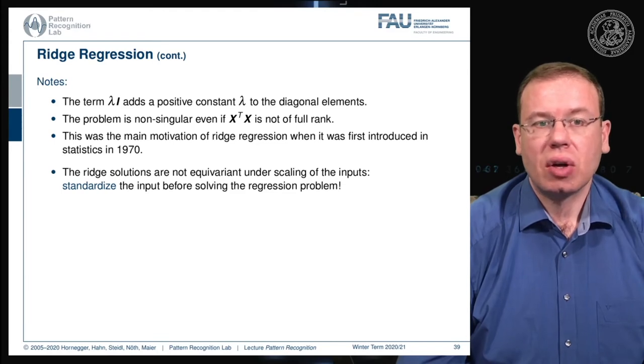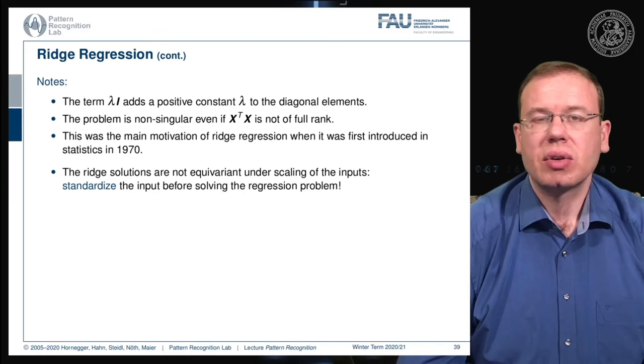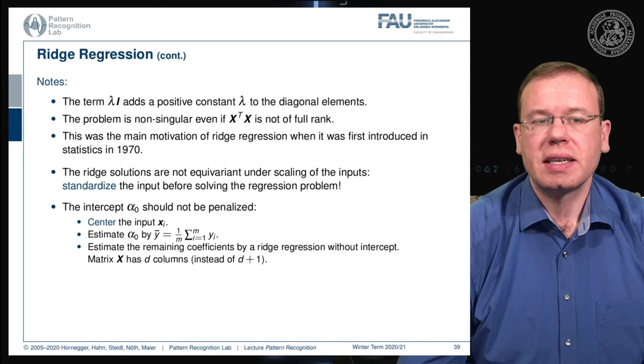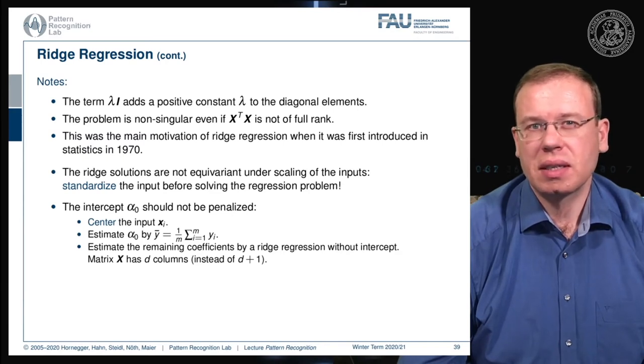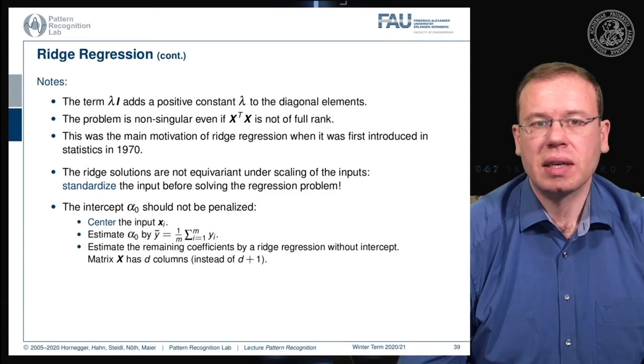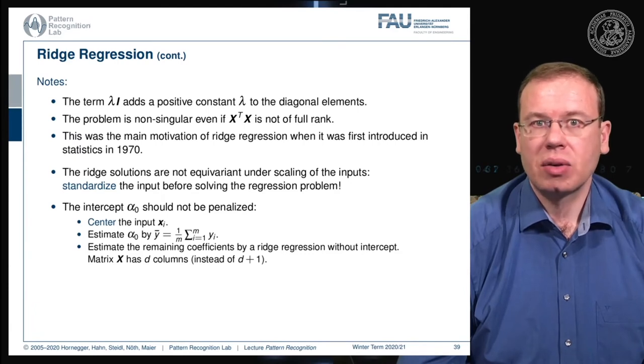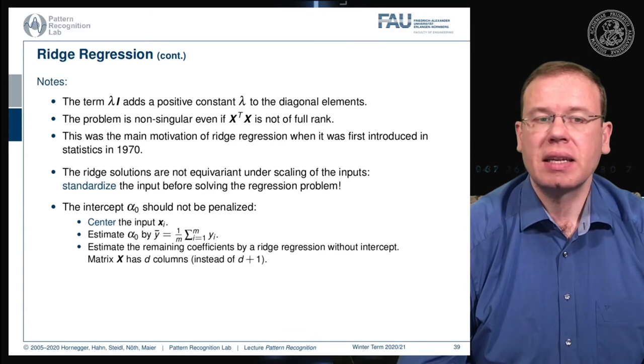The ridge regression solutions are not equivariant under the scaling of the inputs, so you should standardize the input before solving the regression problem. One approach could be that you essentially not penalize the intercept alpha zero. This can be done by centering first the input using the mean of xi, and then you estimate your alpha zero by some estimate of the average of your classes. You compute the mean over the class memberships. Then you can estimate the remaining coefficients by ridge regression without the intercept, which means solving the problem using this matrix X, but you already set alpha as a constant. You solve it on a d-dimensional problem with d columns instead of d plus one.